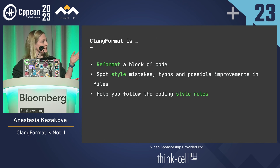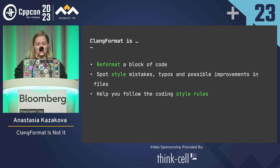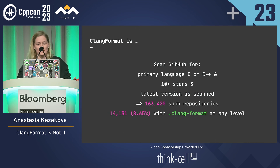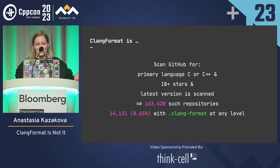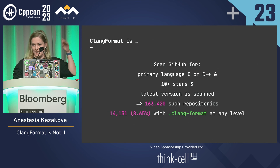If you look further into the kernel documentation, you'll find actually three goals for the ClangFormat tool: obviously, reformat the code, spot style mistakes, and help with the style rules. ClangFormat is capable of reformatting code — I will not argue with that — but is it really a standard tool for formatting? We at JetBrains have a tool that can scan GitHub based on some conditions and filters, and we found that in repositories with the primary language of C and C++, only 8.65% of them have a ClangFormat file at any level inside.